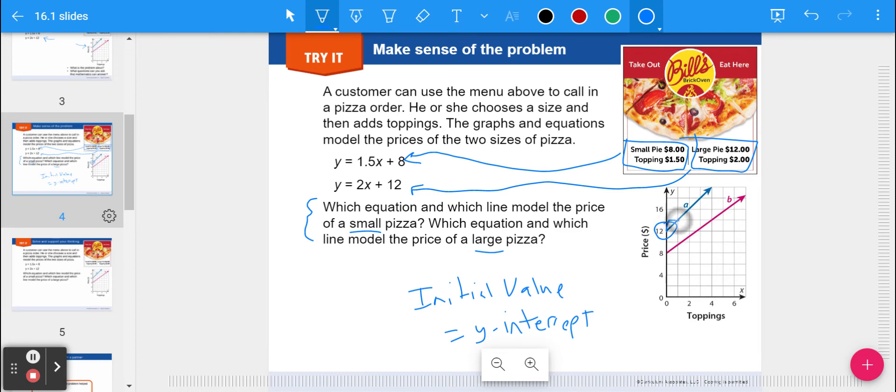If you add toppings it's two dollars extra, so you can see it goes up two dollars every one topping. The small pizza is eight dollars but you add a buck fifty for every one topping.